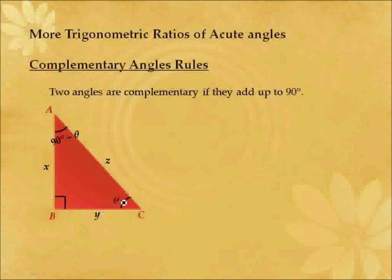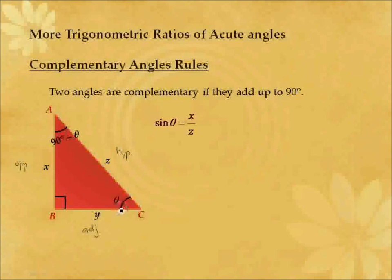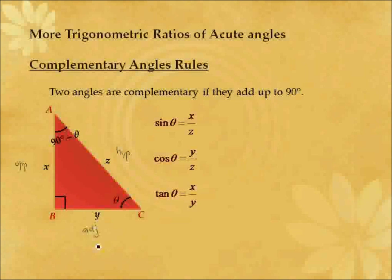Let us first look at angle theta. The sine of theta is defined as opposite over hypotenuse, which is given as x over z. Let me define the opposite, adjacent, and hypotenuse with respect to reference angle theta. The cosine of theta is given as adjacent over hypotenuse, which is y over z. And the tangent of theta is defined as opposite over adjacent, which is x over y. The most important thing to realize is that the opposite, hypotenuse, and adjacent may not be the same depending on the reference angle — the opposite and adjacent will change, but the hypotenuse will not.